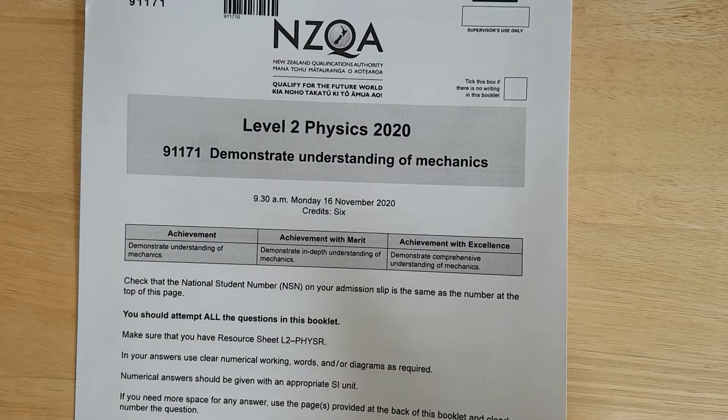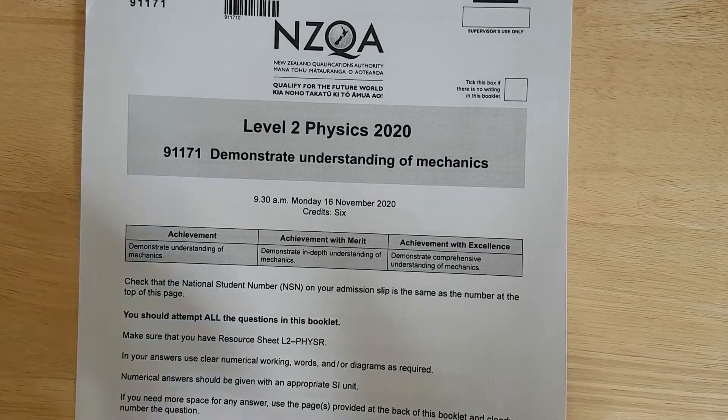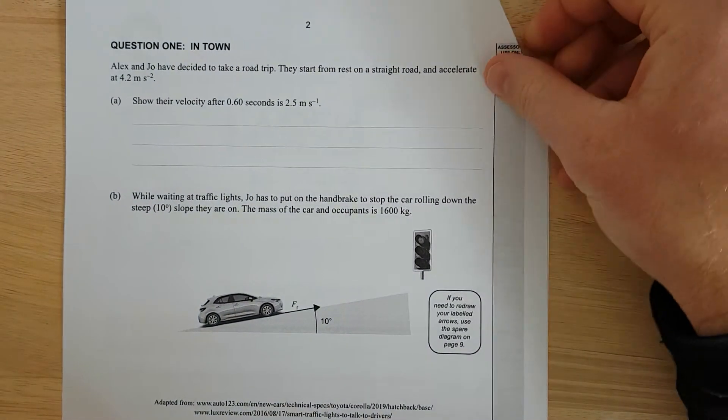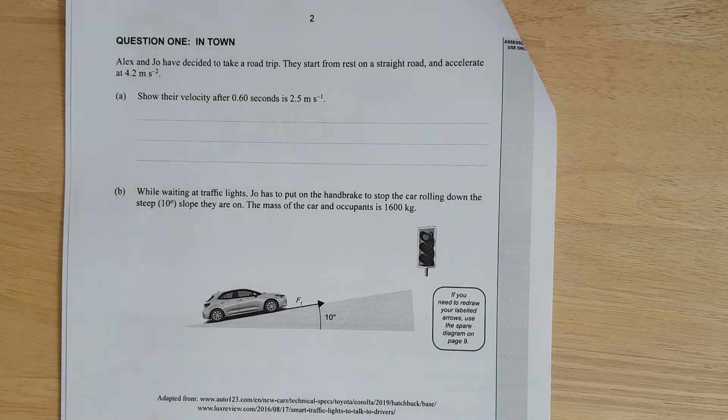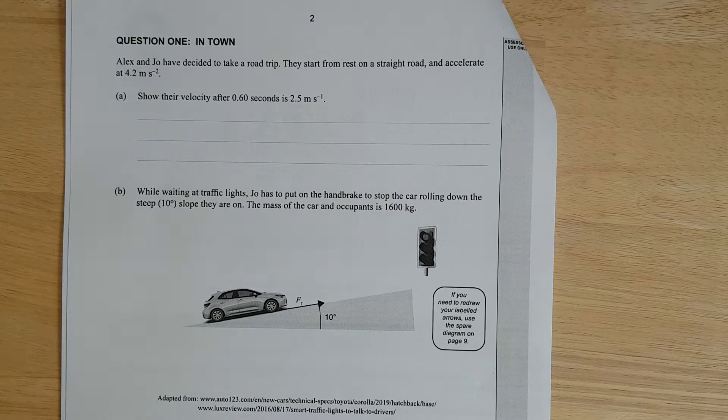This is question one of the 2020 mechanics exam. Alright, question one. Alex and Joe have decided to take a road trip. They start from rest on a straight road and accelerate at 4.2 meters per second squared.